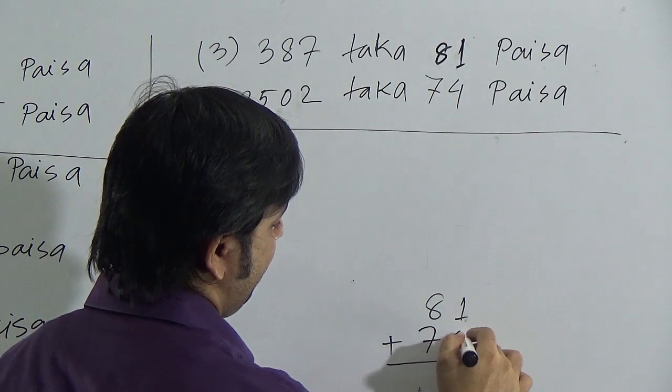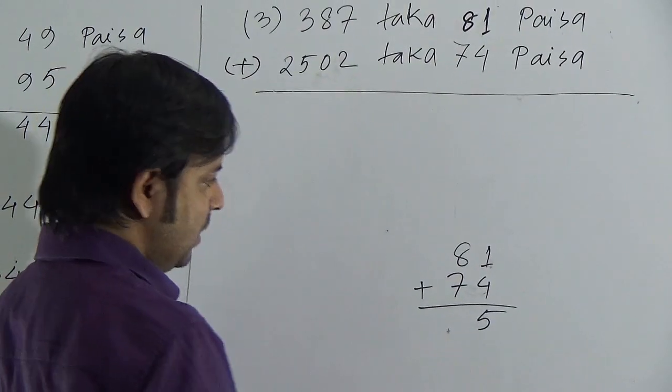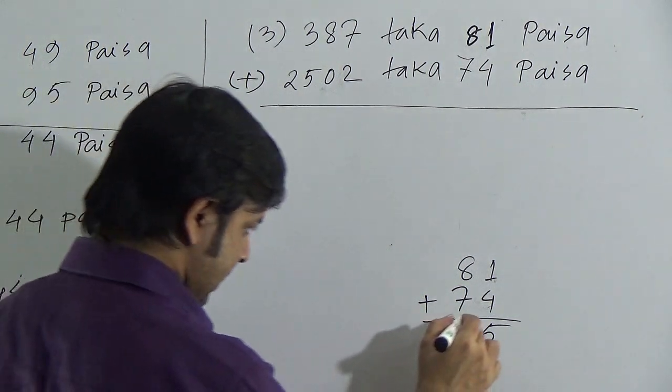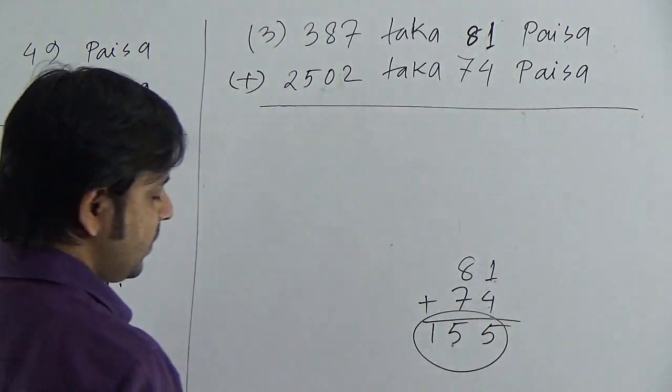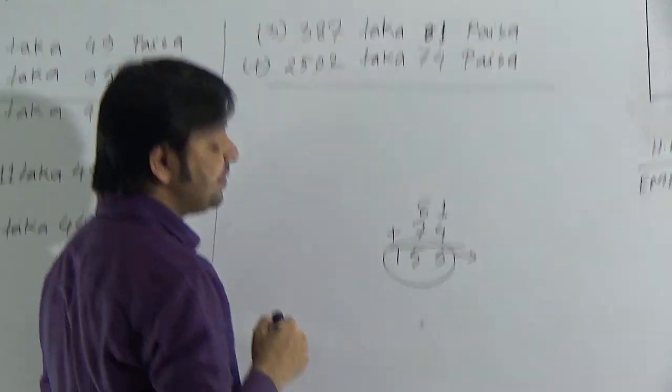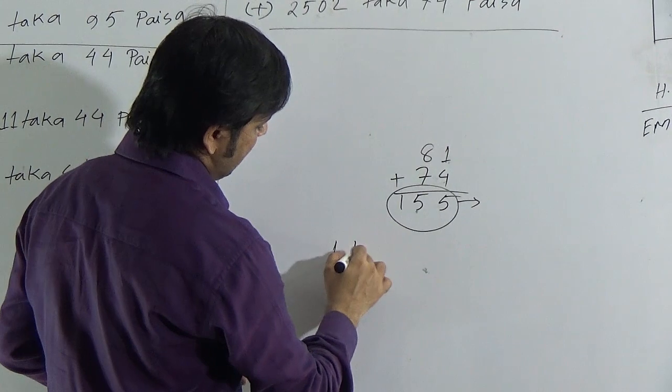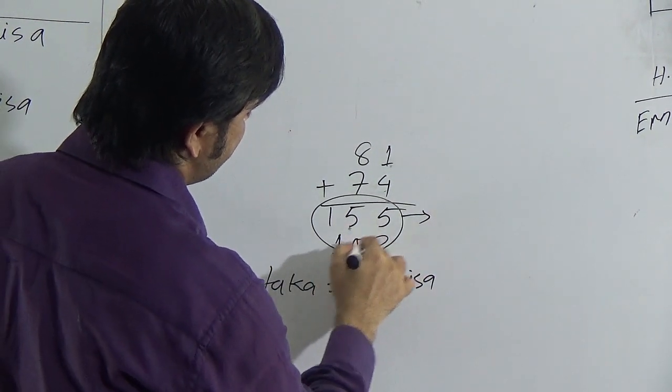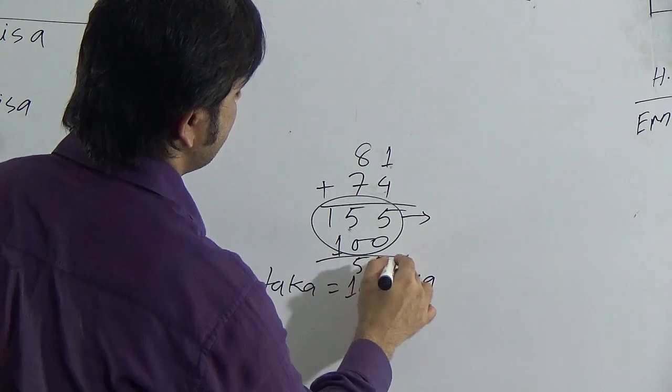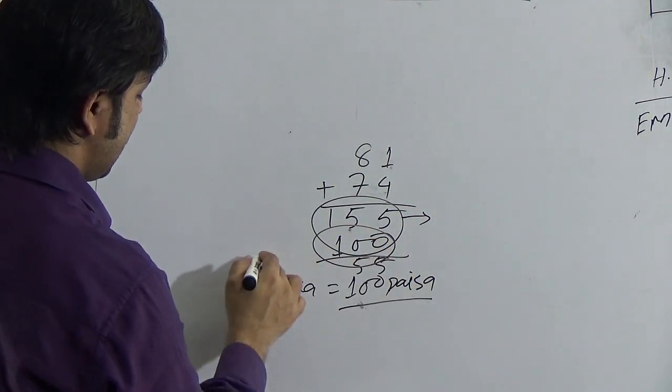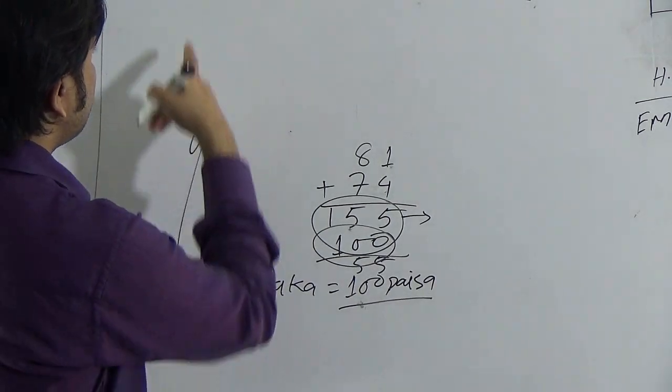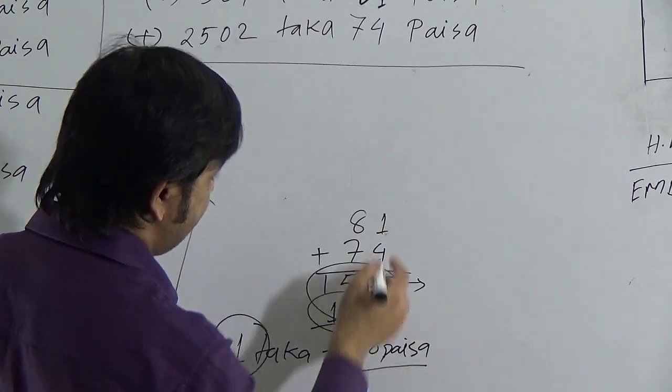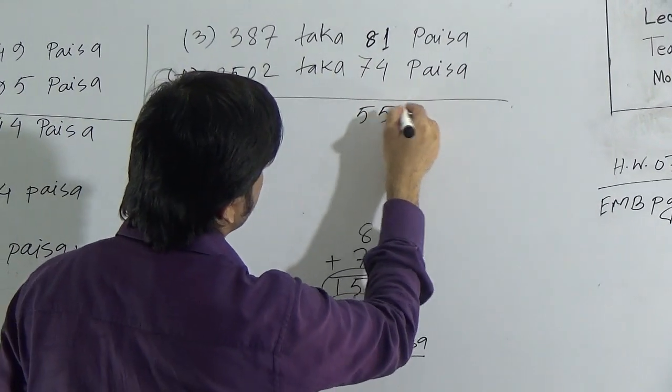So add 4 and 1, this will be 5. Now add 7 and 8, this will be 8 and 7 is 15. So we will get 155 paisa. Dear students, you know 1 taka is equal to 100 paisa. So if we subtract 100 paisa from this, we will get 55 paisa. And for this 100 paisa, we can write 1 taka. So this 1 taka will go to the portion taka. Then we can write remaining 55 paisa in paisa.